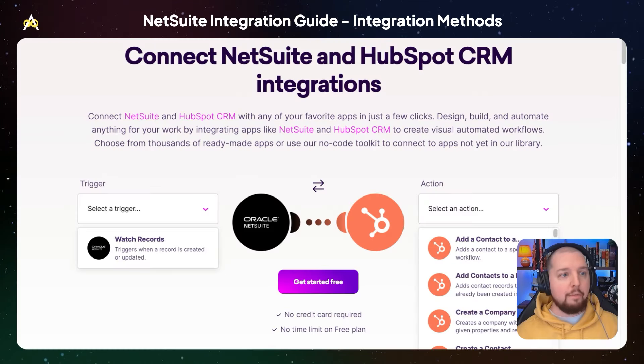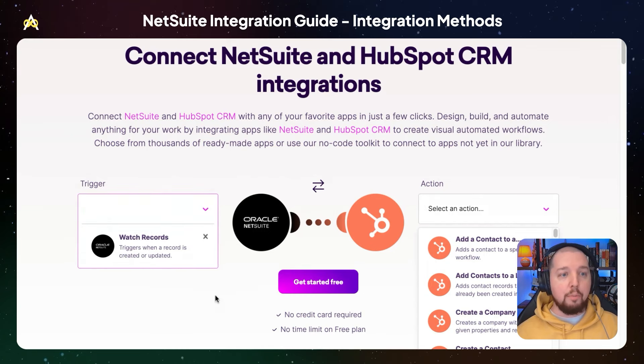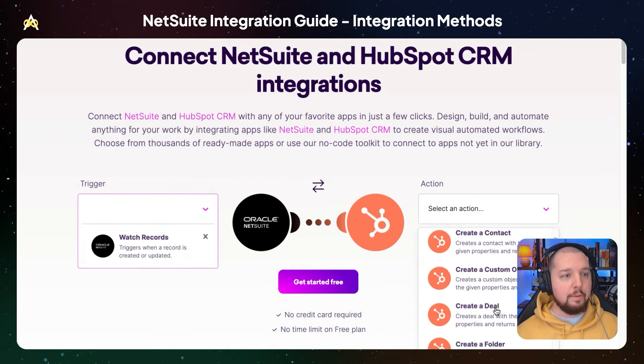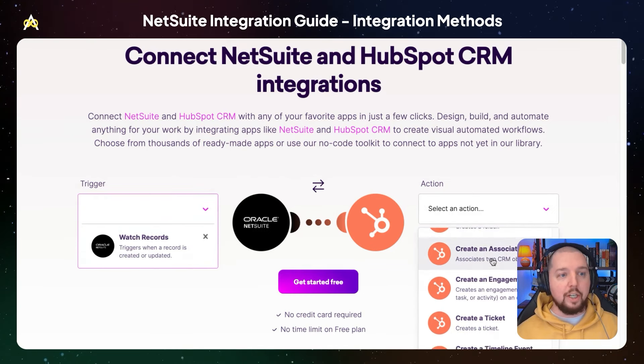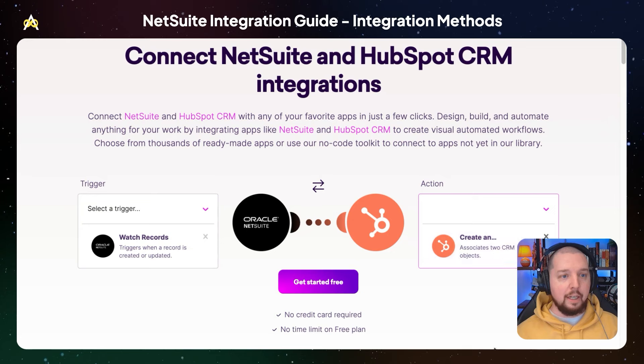Another option for integrating NetSuite with HubSpot is to use a third-party integration platform. iPaaS platforms like Make or Workato offer pre-built connectors and integration apps for NetSuite and HubSpot, which can simplify the integration process while also providing more customization and flexibility than the native data sync.